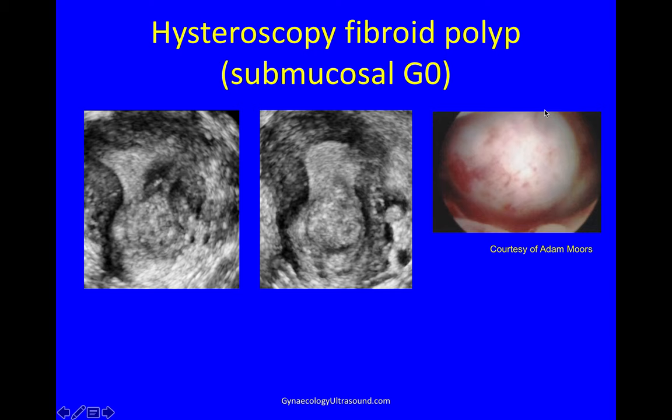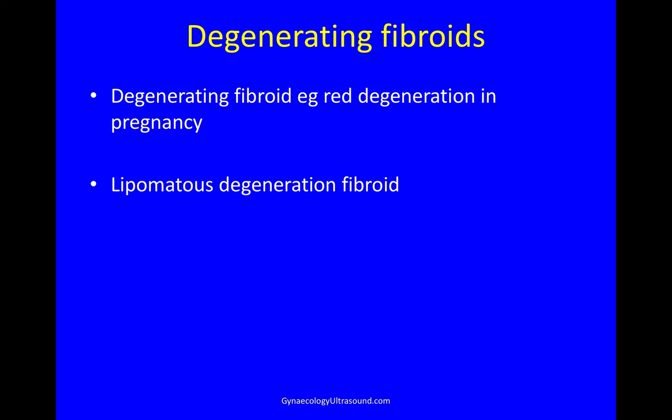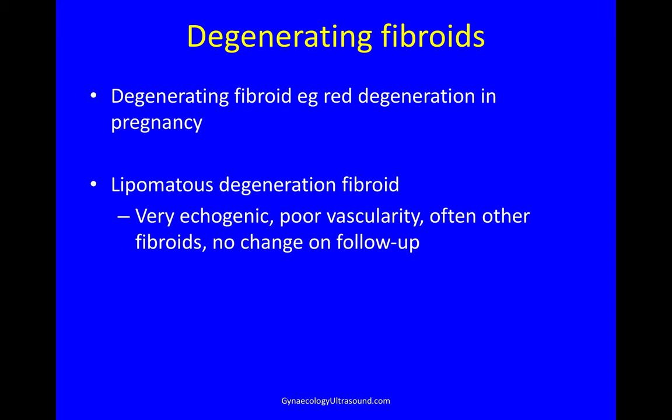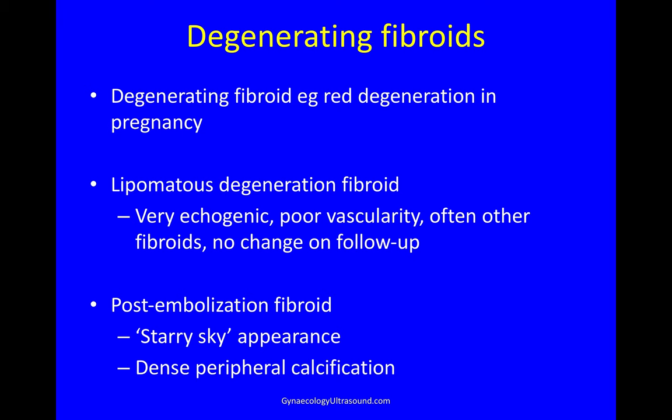Fibroids can degenerate. In pregnancy this is typically called red degeneration and can be quite painful. Lipomatous degeneration of a fibroid is painless and is more associated with older people, where the lesion would be very echogenic and not very vascular, there are often lots of other fibroids, and it doesn't change on follow-up. After uterine artery embolization the fibroid can have a starry sky appearance with dense peripheral calcification.